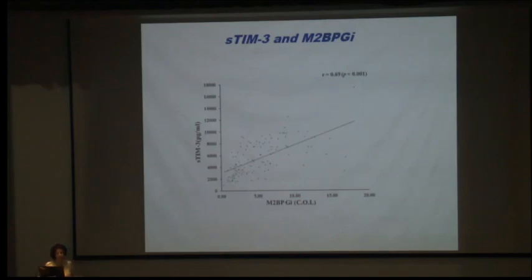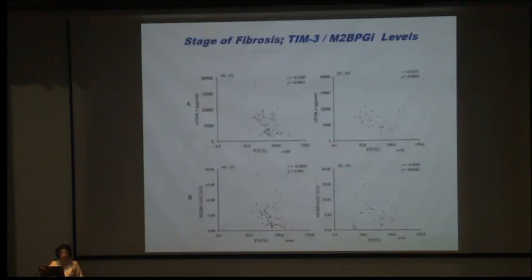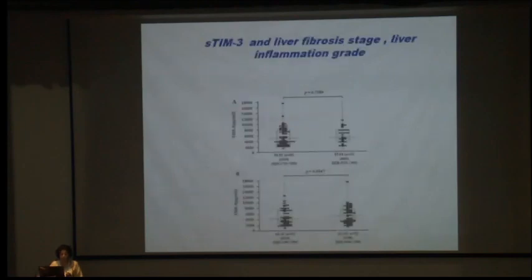They also correlated soluble TIM-3 with M2BPGi — the classical fibrosis marker used in HBV, HCV, and autoimmune hepatitis, a macrophage-binding protein. Soluble TIM-3 showed strong positive correlation with M2BPGi with R² of 0.69. M2BPGi and prothrombin time were downregulated together, while soluble TIM-3 correlated with increased PT and elevated fibrosis stages F0-F2 and F3-F4. Soluble TIM-3 was strongly correlated with autoimmune hepatitis and liver fibrosis.